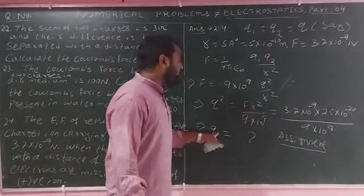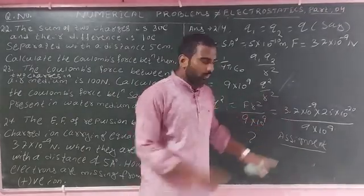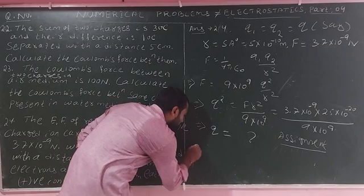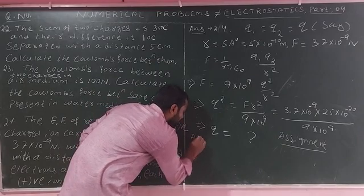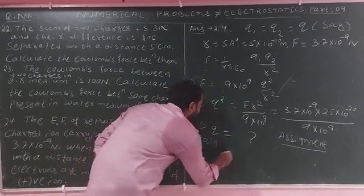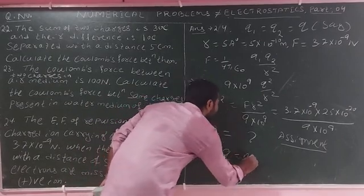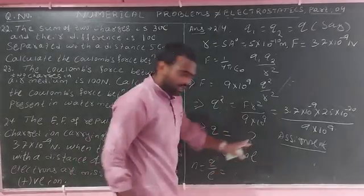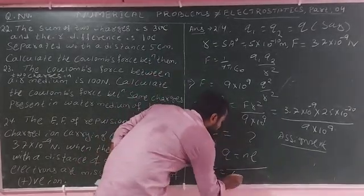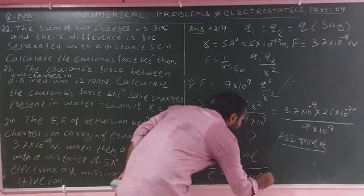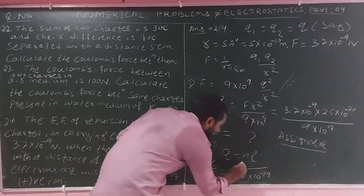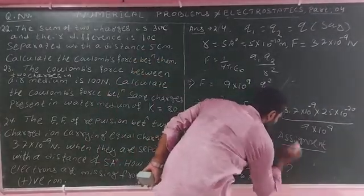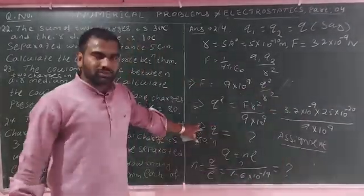Solving for Q squared: rearrange to get Q squared, then take the square root to find the magnitude of Q. Once we have Q, we use the quantization formula n equals Q divided by e, where e equals 1.6 times 10 to the power minus 19 coulombs, to find the number of missing electrons.